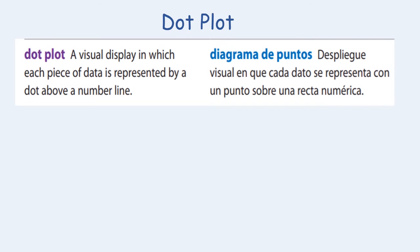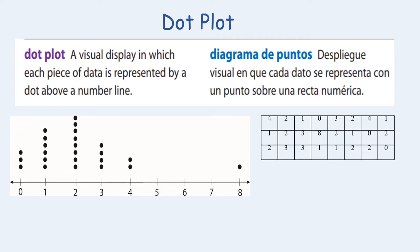Let's investigate dot plots. A dot plot is a visual display in which each piece of data is represented by a dot above the number line. Here is an example. To the right you will see numbers in a table. To the left you will see the dot plot that represents those numbers and the frequency of those numbers from the table to the right.